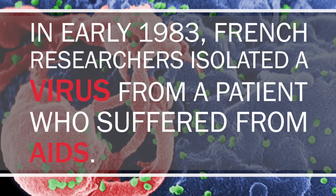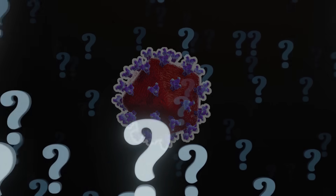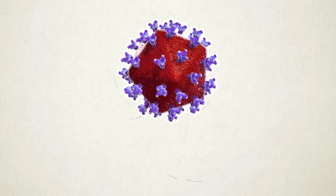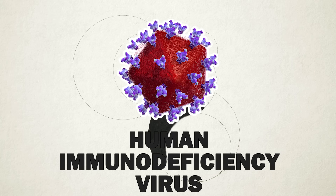In early 1983, French researchers isolated a virus from a patient suffering from AIDS. They proposed that this virus might be connected to the disease. In 1984, an independent team identified the same virus in AIDS patients, and two other research teams did the same. A US team then summarized all the data and found that this virus is always present in AIDS patients. In 1986, the isolated virus was officially named HIV, the Human Immunodeficiency Virus.